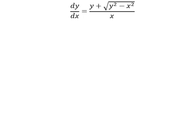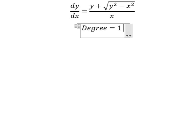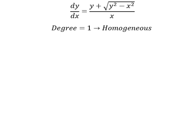Hello everybody, so today I want to show you how to answer: we have dy/dx equals y plus the square root of y squared minus x squared divided by x. The degree is one, so this is about homogeneous.